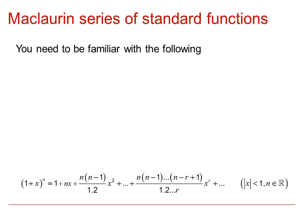And (1 plus x) to the n is 1 plus nx plus n(n minus 1) over 2 factorial times x squared, which is the general binomial theorem. And generally for real values of n, x needs to be between minus 1 and 1.